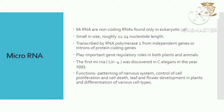The first microRNA, LIN4, was discovered in C. elegans in the year 1993. Functions of microRNAs include patterning of the nervous system, control of cell proliferation and cell death, leaf and flower development in plants, and differentiation of various cell types.